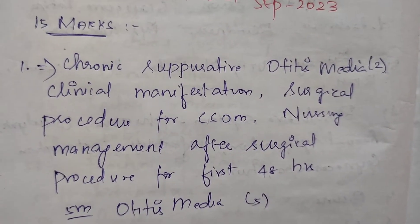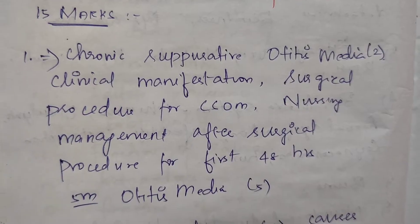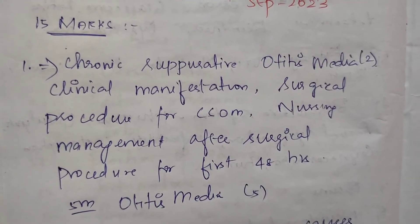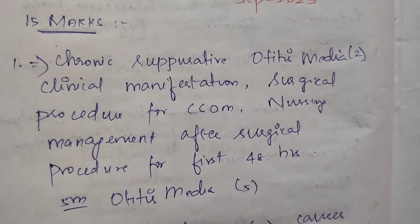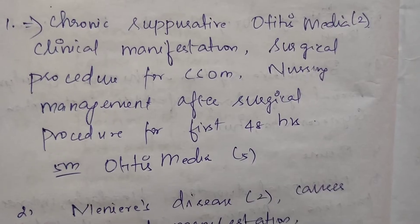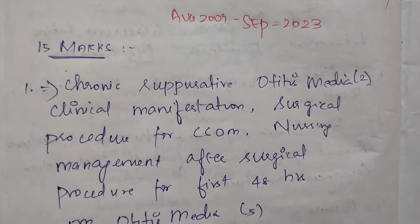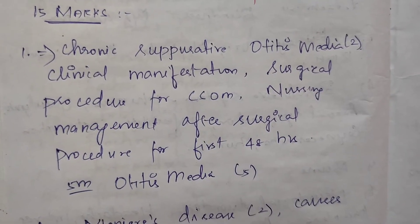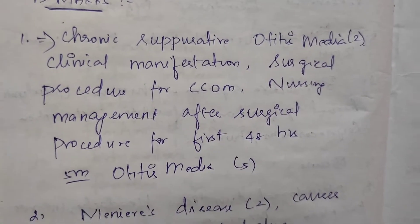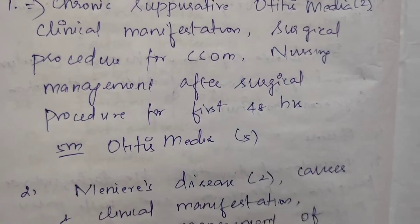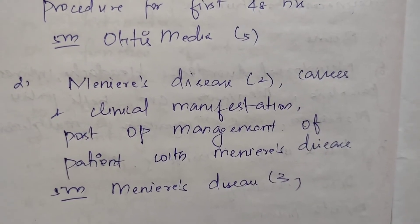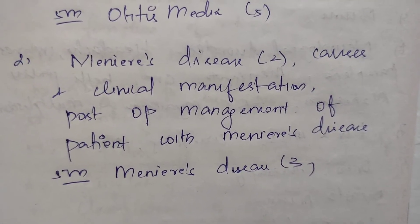The first question is chronic suppurative otitis media. Overall, there are two questions on this topic. In 15 marks, we are going to mention nursing diagnosis and care plan. In 5 marks, the question covers the definition, causes, and clinical manifestations. Also in 5 marks, post-operative management of patients.